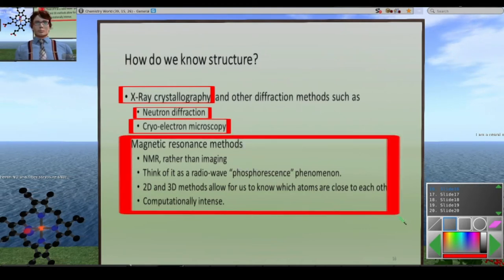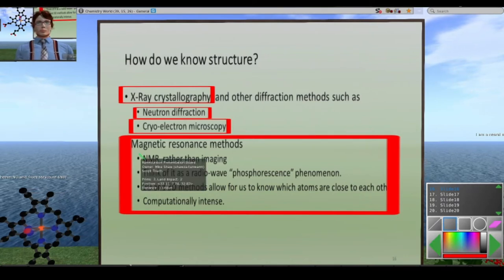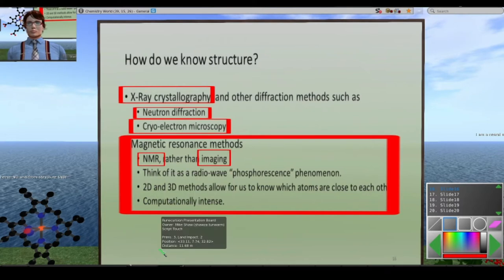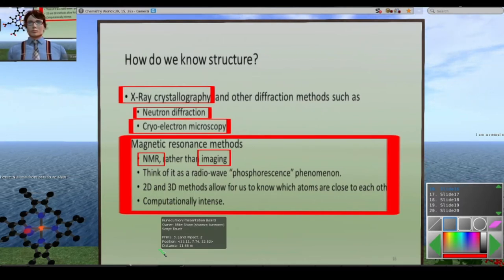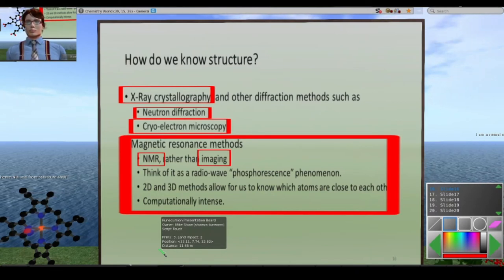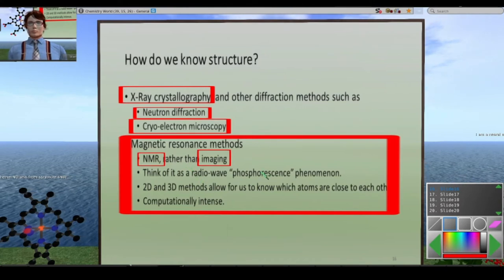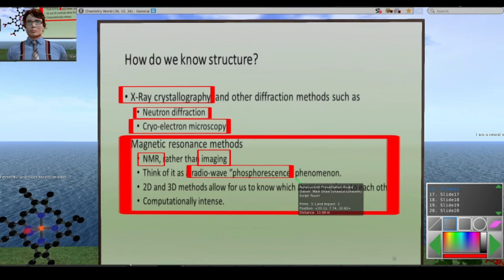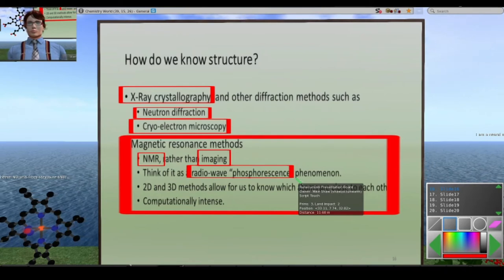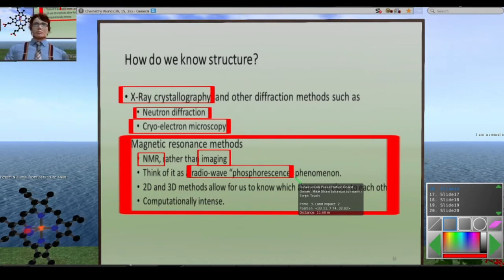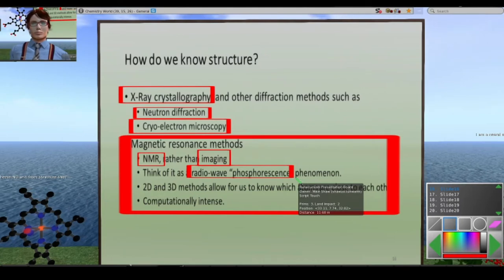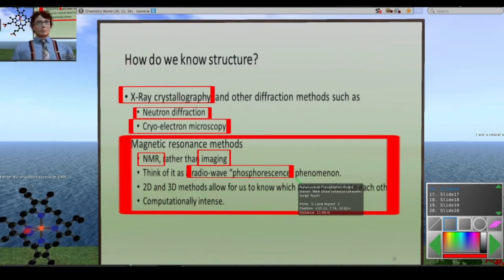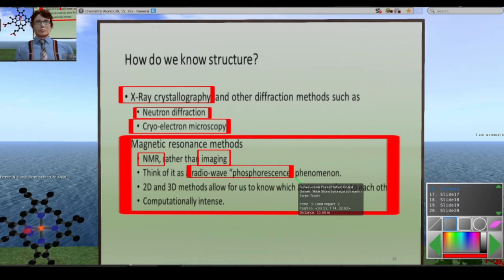There's also magnetic resonance methods, and when you think magnetic resonance, often people think about imaging, but really I'm talking about more of the NMR technique, nuclear magnetic resonance. It's not radioactive or anything like that. It's just atoms have nuclei, right? So the word nuclear is just an adjective there. You can think of NMR methods as being radio wave phosphorescence phenomenon. Essentially you have a sample, you can hit it with a bunch of radio waves all at once, and then for a few seconds afterwards, you might detect radio waves coming out. From the intensity versus time plot of the radio waves that come out, you can infer, after a Fourier transform, some details about the structure of compounds.